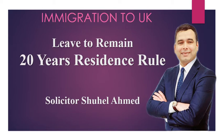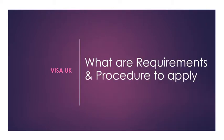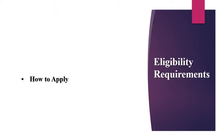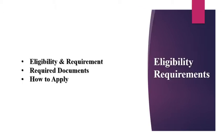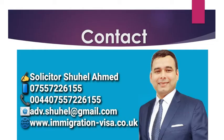Hello viewers. Today I'll speak about leave to remain on the basis of 20 years long residence. In this video I'll show you how you can apply for a leave to remain application on the basis of your 20 year long residence, what the eligibility requirements are, and the required documents. The main requirement is the 20 years long residence rules. If you are 25 years old or over and have been living in the UK continuously for 20 years, you can apply. The 20 years residence rule is basically a private life application.